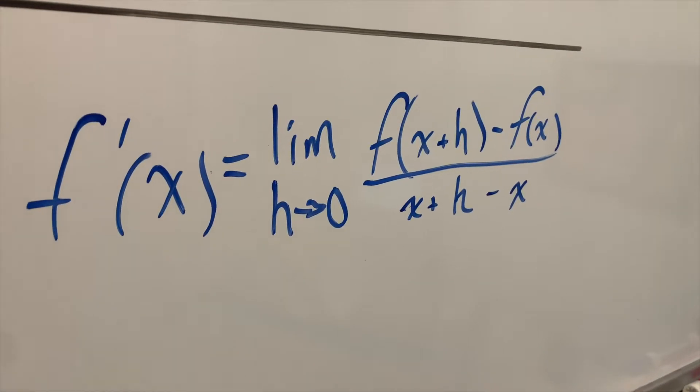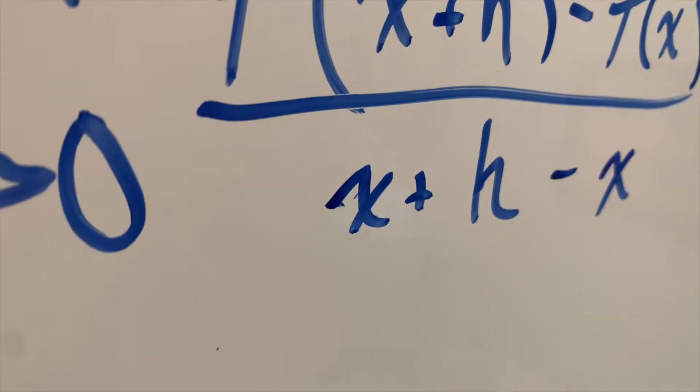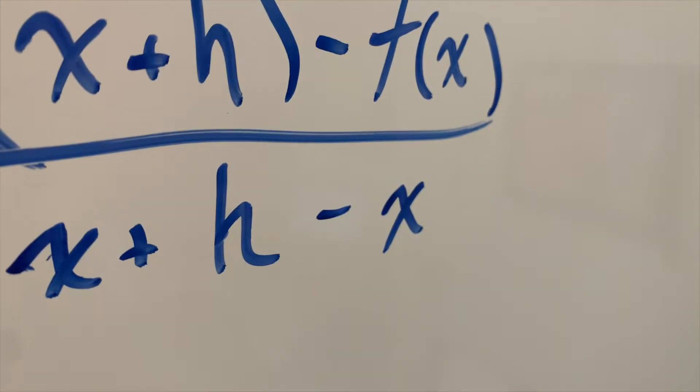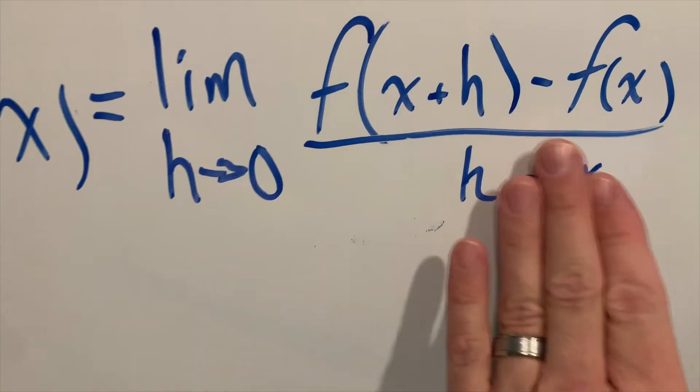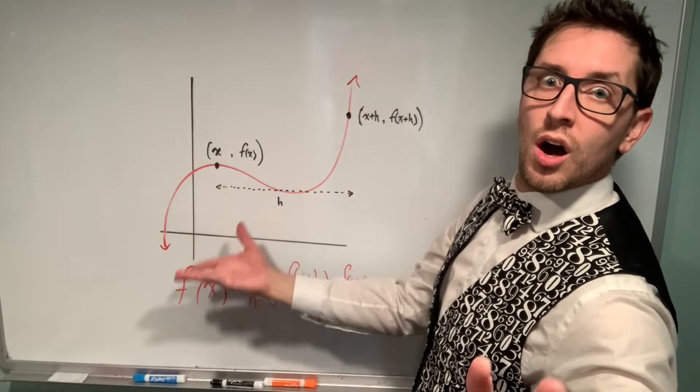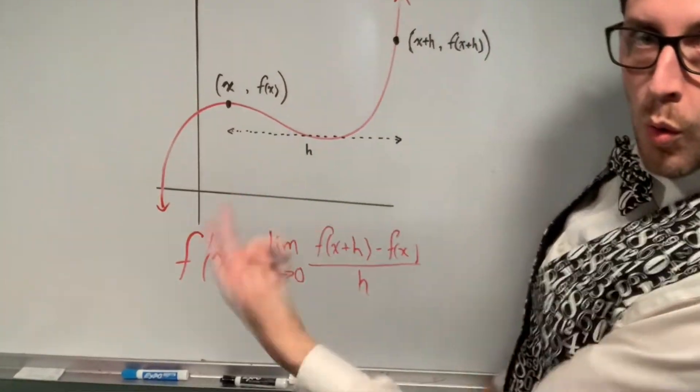And sure enough, our first principle's definition tells us to take x plus h and subtract x. And of course, these x's are going to cancel out, which leaves us with our first principle's definition of the derivative.